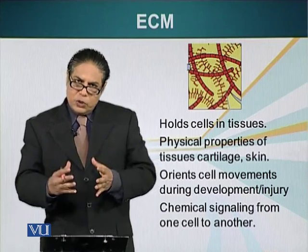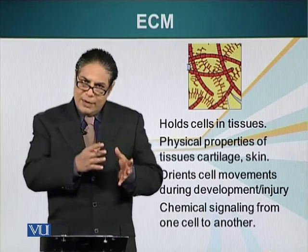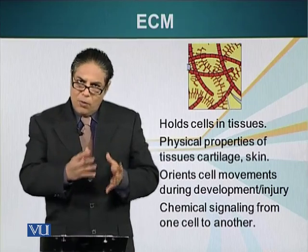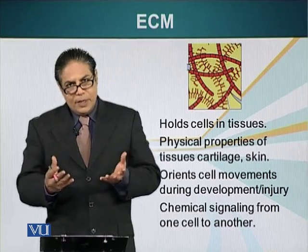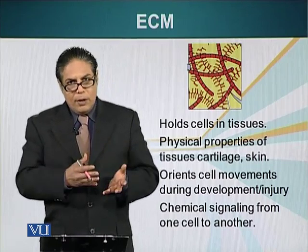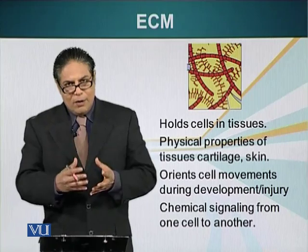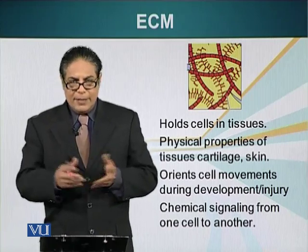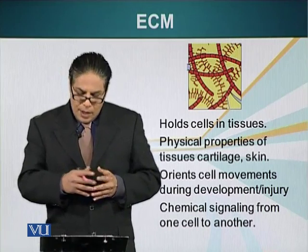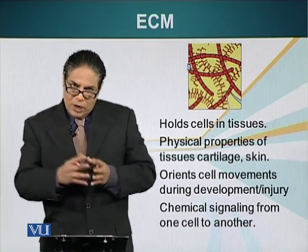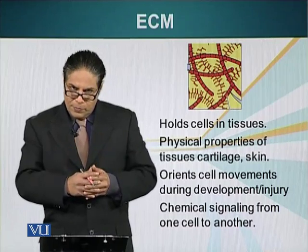Some tissues have a lot of extracellular material while other tissues have relatively little or no ECM. For example, the brain has very little ECM. Bone, on the other hand, is primarily made of extracellular material — in this case, it is calcium phosphate. ECM or extracellular matrix can have several biological roles.